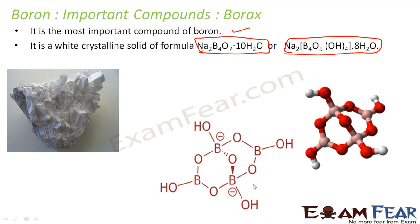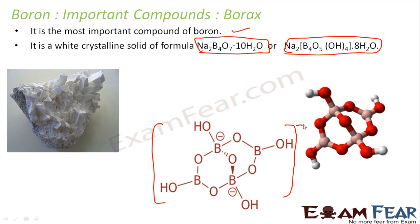If you see the structure of borax, this is actually an anion with a negative 2 charge. This is minus 2 charge, and then here you add sodium — 2 ions of sodium — and then we have 8 water molecules.